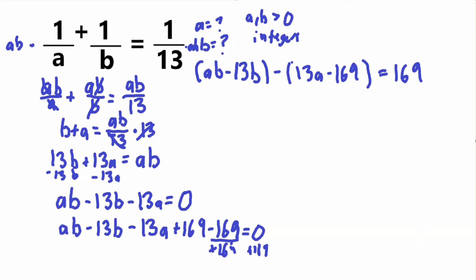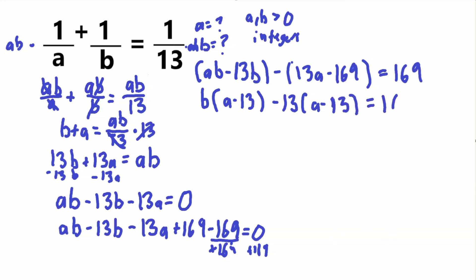So now we have ab minus 13b minus 13a minus 169 is equal to 169. I did this because now we can do some factoring. On the left side, ab and 13b share a common factor of b, so we factor that out to get b times (a minus 13). Then 13a and 169 share a factor of 13 — since 169 equals 13 squared — so we factor out 13 to get 13 times (a minus 13). This equals 169.